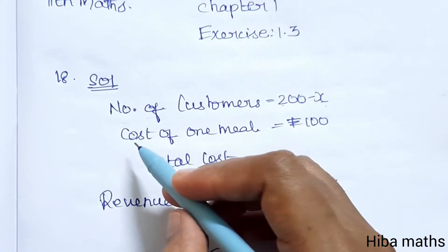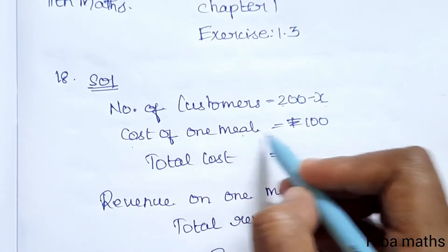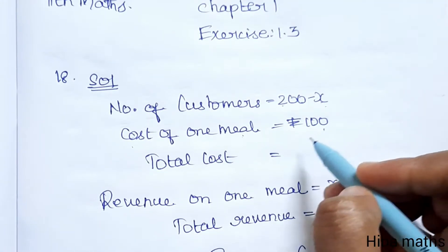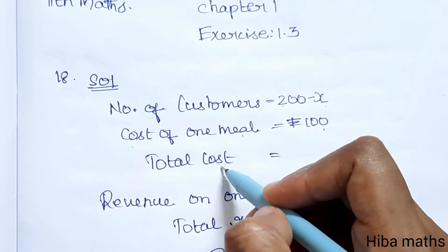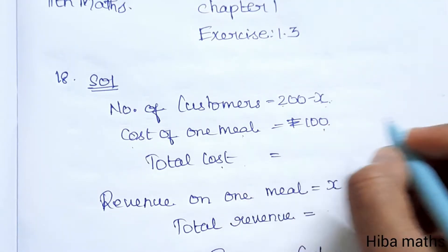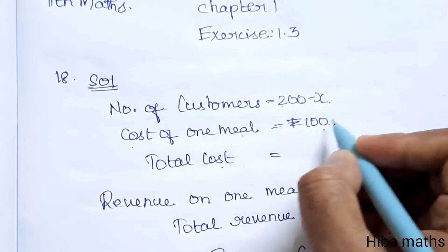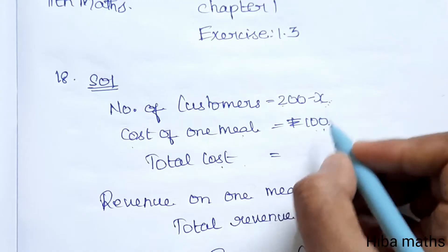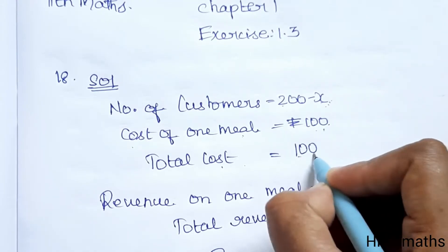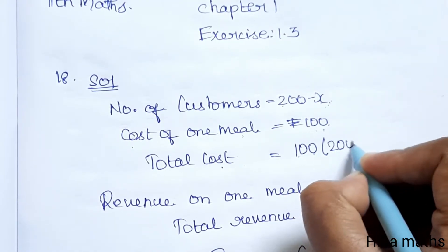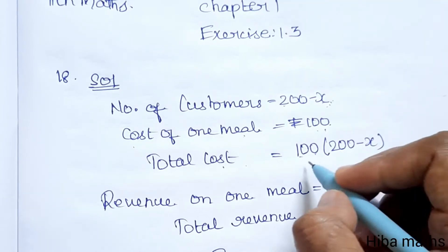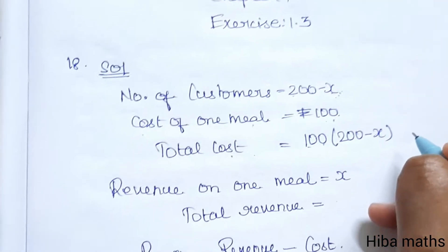The cost of one meal is 100. Now the total cost — total cost means cost per meal multiplied by number of customers. So the meal cost is 100 and the number of customers is 200 minus x. So total cost equals 100 into (200 minus x).